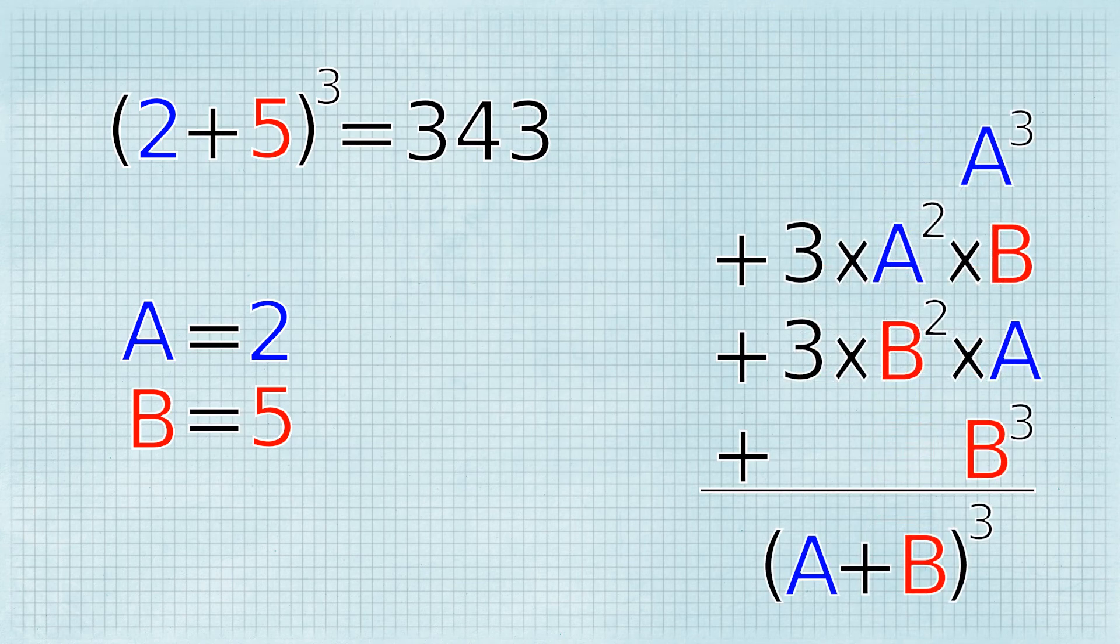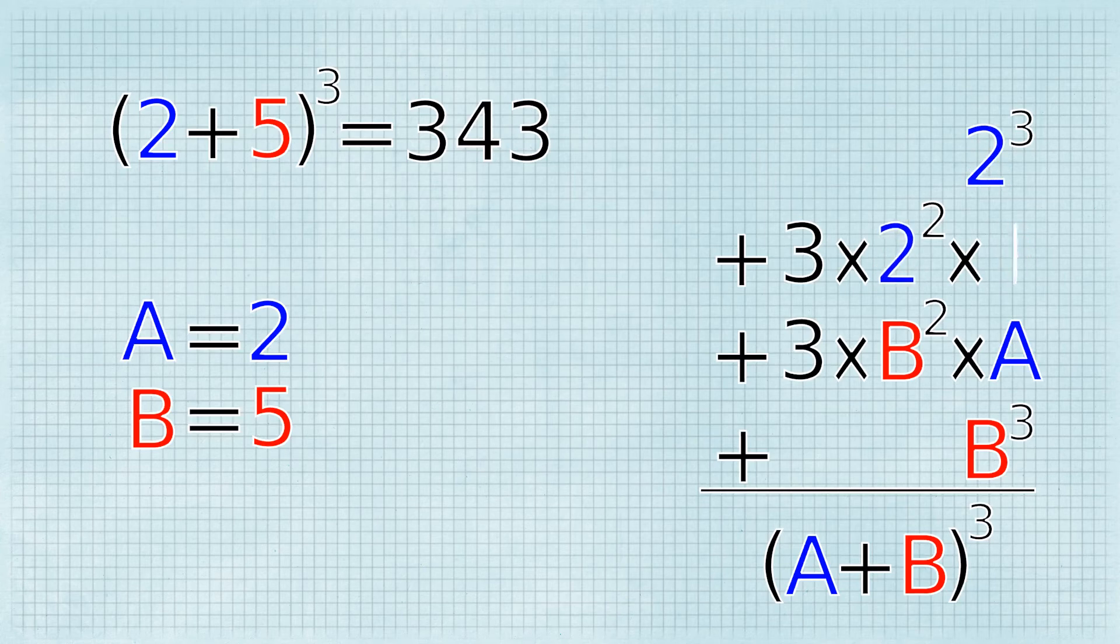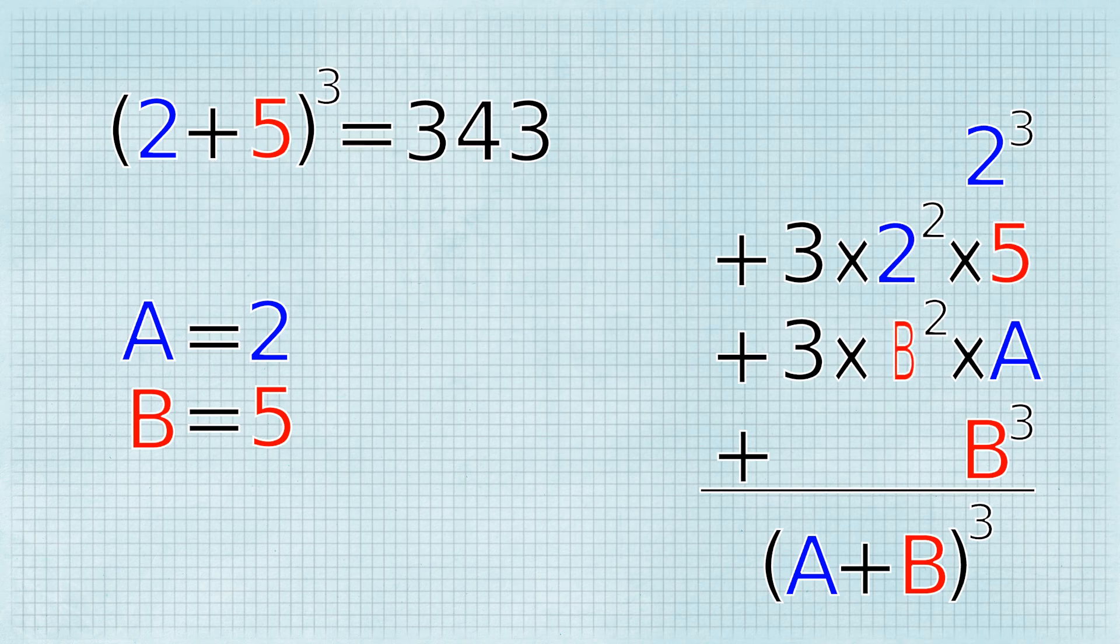2 plus 5 cubed equals 2 cubed plus 3 times 2 squared times 5 plus 3 times 5 squared times 2 plus 5 cubed,